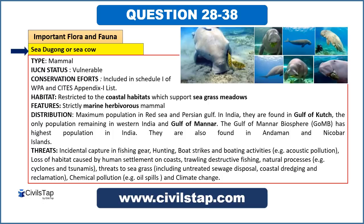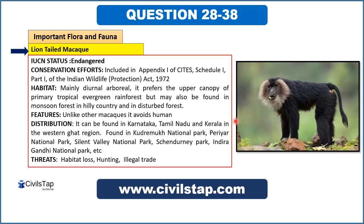The next species is lion-tailed macaque — an IUCN endangered mammal, included in CITES Appendix 1 and Schedule 1 of WPA, so trading or killing is completely prohibited. It is an arboreal animal found in evergreen forests, specifically in the Western Ghats region — Karnataka, Tamil Nadu, and Kerala. Key national parks where it is found include Kudremukh National Park in Karnataka, Periyar National Park in Kerala, and Silent Valley National Park in the Western Ghats.